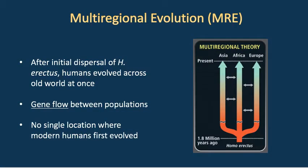The multi-regional evolution model, or MRE, holds that there was an initial dispersal of Homo erectus out of Africa at 1.8 million years ago. They moved to distant regions in Europe and Asia, and all of those populations evolved at the same time along the same trajectory. There's a lot of gene flow between all of these populations — enough gene exchange between Asian, African, and European populations that they all stay on the same evolutionary trajectory. The key for MRE is that there's no single location where modern humans first evolved.